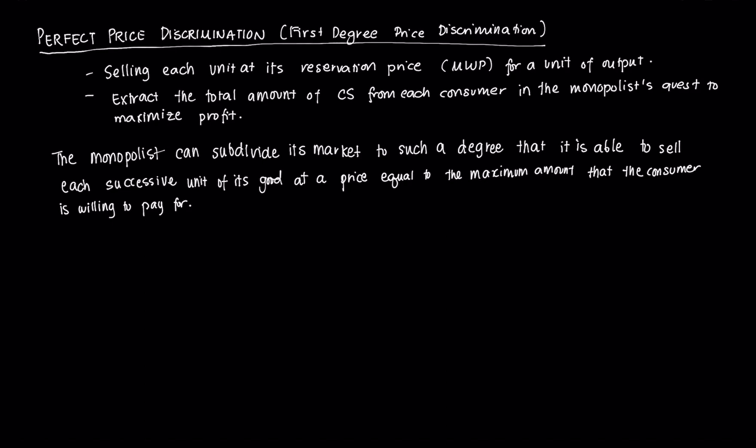The purpose of doing this is to capture the entire amount of consumer surplus — to extract the total consumer surplus from each consumer in the monopolist's quest to maximize profit. To do this, the monopolist must subdivide its market to such a degree that it can sell each successive unit at a price equal to that reservation price. It needs to know each consumer's maximum willingness to pay and sell at exactly that reservation price.